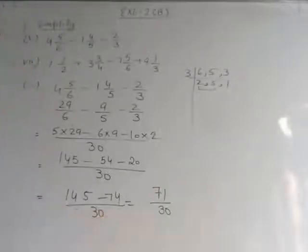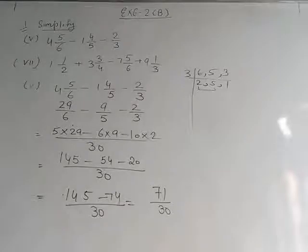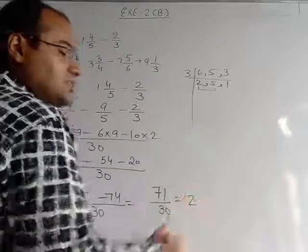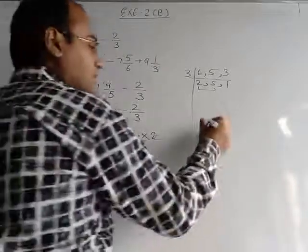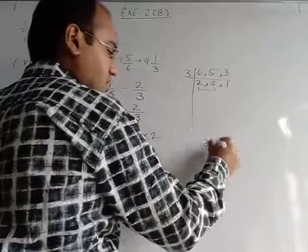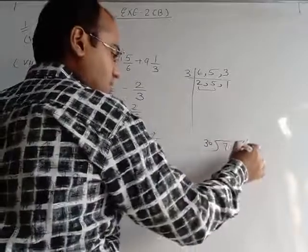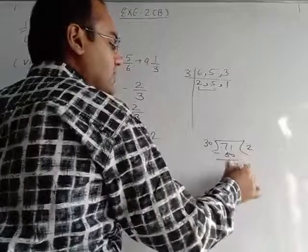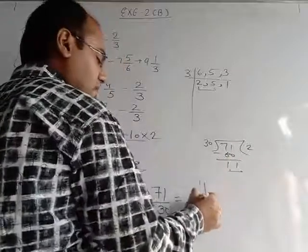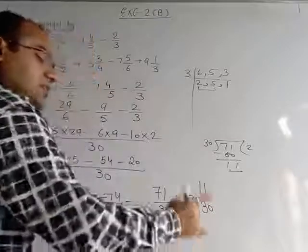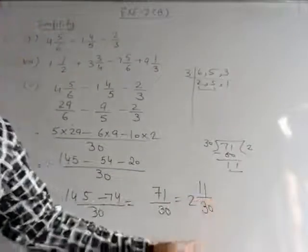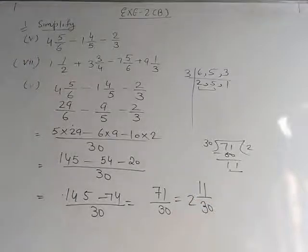These two numbers have minus sign on the left-hand side, and minus and minus is plus, so we add them: 54 plus 20 = 74. The sign is of the greater number (54 is minus). We write 145 as it is. This number has no sign — plus and minus gives minus — so we subtract: 145 minus 74 = 71 upon 30.